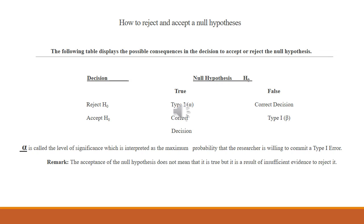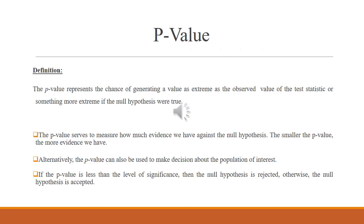The acceptance of the null hypothesis does not mean that it is true, but is a result of insufficient evidence to reject it. When results become non-significant, we also have p-values to help make our test significance decision. The p-value represents the chance of generating a value as extreme as the observed test statistic if the null hypothesis were true. A smaller p-value means more evidence against the null hypothesis. If the p-value is less than the level of significance, the null hypothesis is rejected; otherwise it is not rejected.